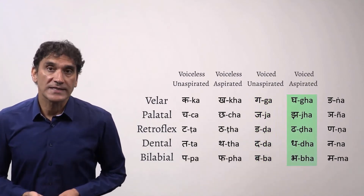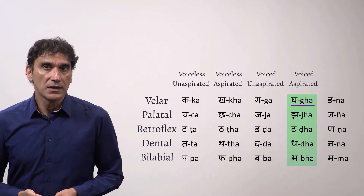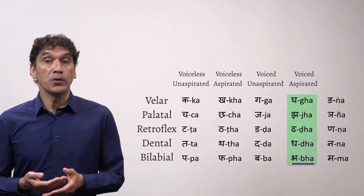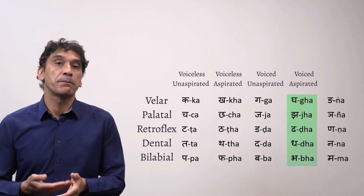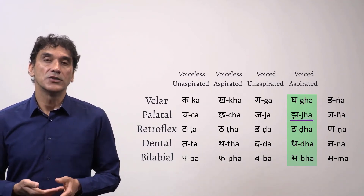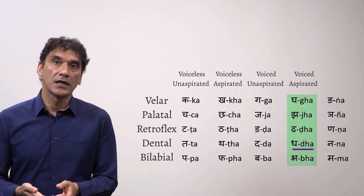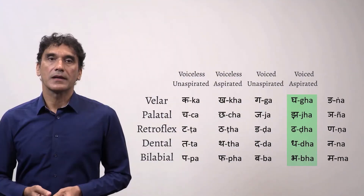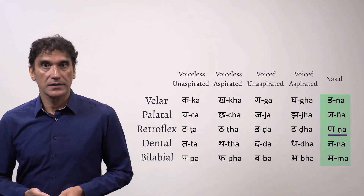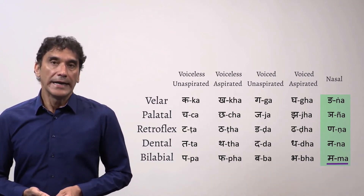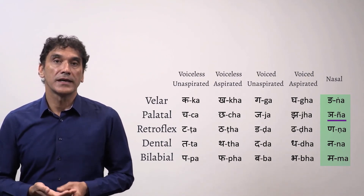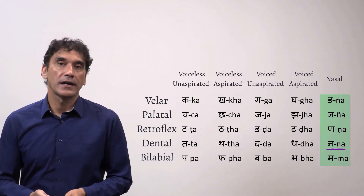The fourth column is voiced aspirated consonants — they are both voiced and aspirated, meaning there is a puff of air coming out as well as vibration when you pronounce them: gha, jha, dha, dha, bha. The final column is the nasal sounds: gya, nya, nha, nha, and ma. Nasal sounds means you produce these sounds with the flow of air through your nose.